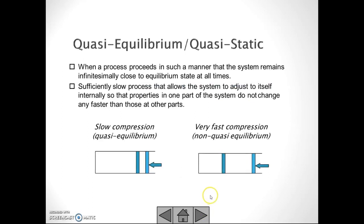Quasi-equilibrium or quasi-static: when a process proceeds in such a manner that the system remains infinitesimally close to equilibrium state at all times. A sufficiently slow process that allows the system to adjust itself internally so that properties in one part of the system do not change any faster than those at other parts.